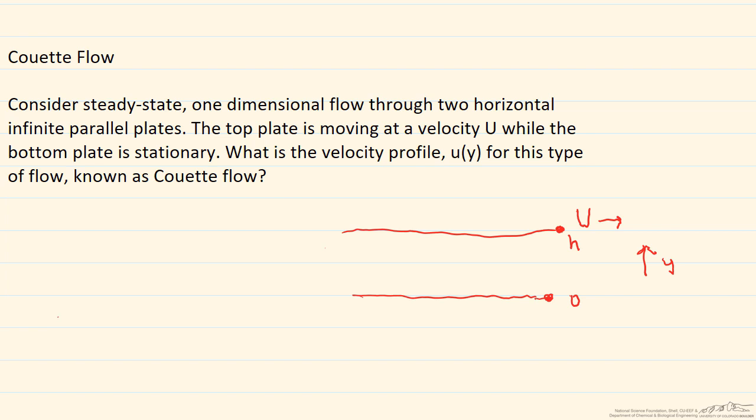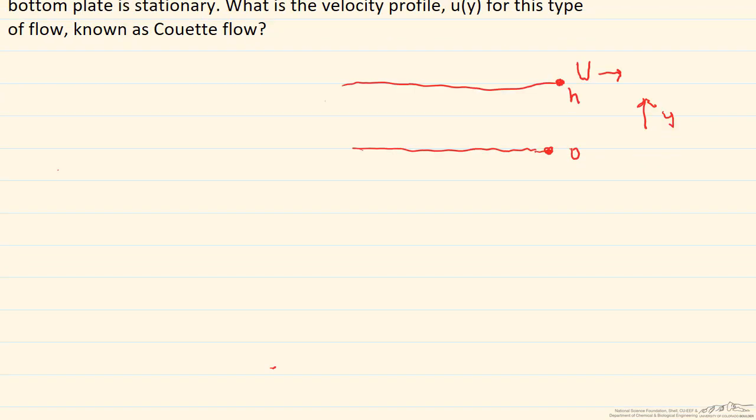Now we need that velocity profile, in other words, u as a function of y, for this Couette flow. Let's start by writing the general simplified Navier-Stokes equation for steady state, one-dimensional flow, two horizontal, infinite parallel plates. That's going to be u(y) equals one divided by two times the viscosity, dp/dx, which is the pressure gradient, times y squared, plus C₁ times y, plus C₂.